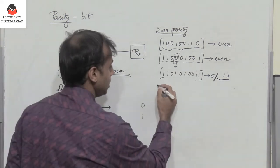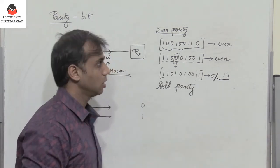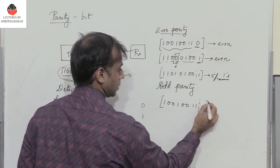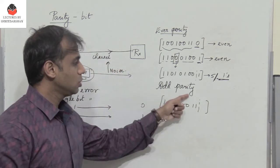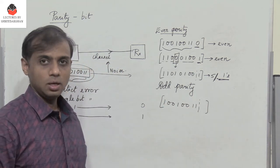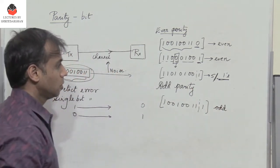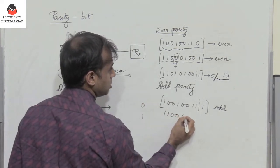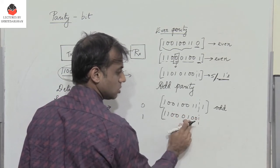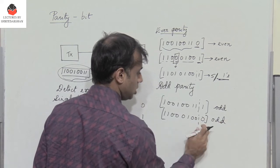In odd parity, the total number of 1s in the entire data, including the parity bit, should be odd. For the data 10010011 with four 1s, the parity bit is 1, making five 1s total — which is odd. For the data 11000100 with three 1s, the parity bit is 0, keeping the total at three — which is odd.